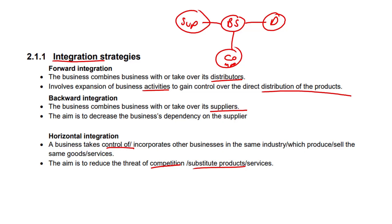We operate in the same industry and join business operations. Maybe we put them under the same company, or they can maintain their identity so we can still differentiate between the two companies as a consumer. And yeah, we're reducing competition, we're also eliminating the threat of substitute products and services, and in turn we're increasing our market share by taking over their market share, selling the same products and getting their profit.